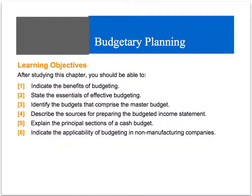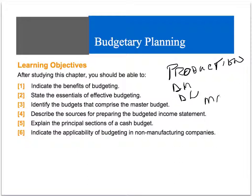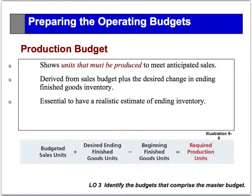In this concept video, we're going to look at the production budget, the direct material purchasing budget, direct labor budget, and the manufacturing overhead budget. The production budget shows the number of units that we must produce.